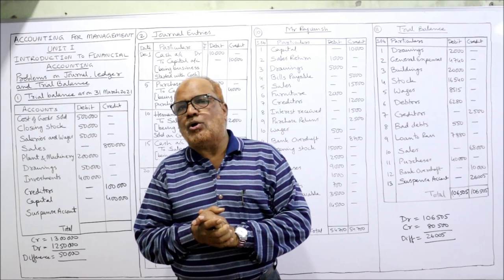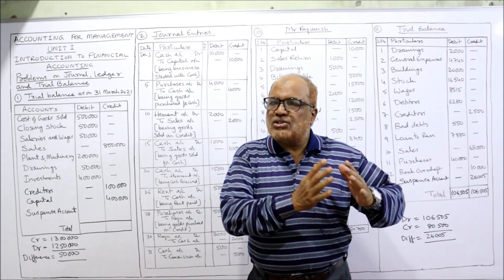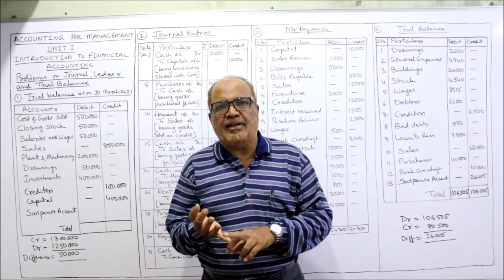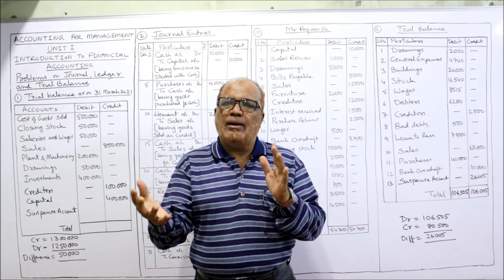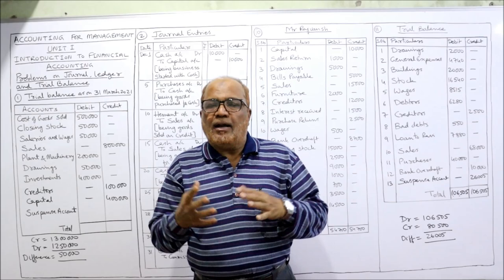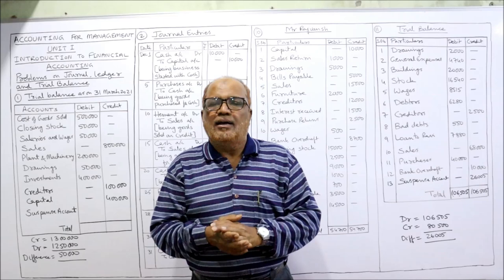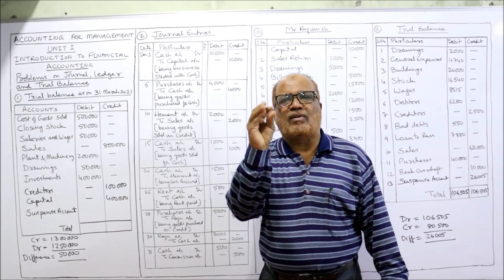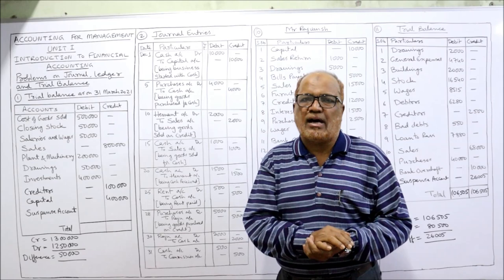Hello viewers, welcome to my channel. I'm Harsha Vali Khan. Now I'm going to start the problems on journal, ledger, and trial balance — that is unit number one. In the last five videos I have completed the meaning of financial accounting, objectives, advantages, limitations, accounting concepts and conventions, double entry system, accounting process, accounting cycle, and what is journal, ledger, and trial balance.